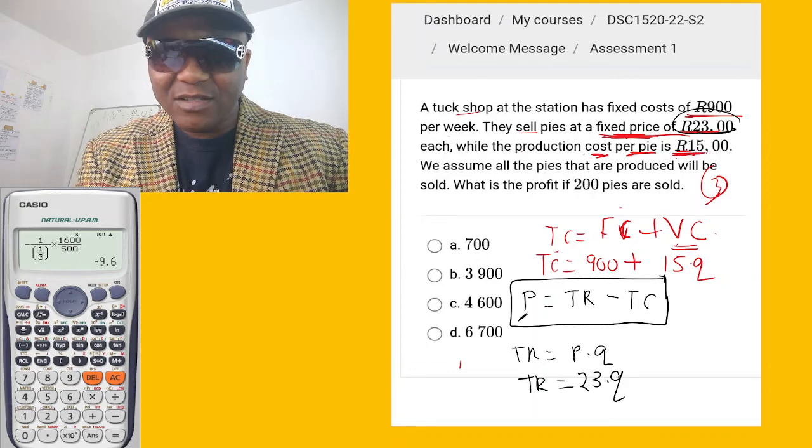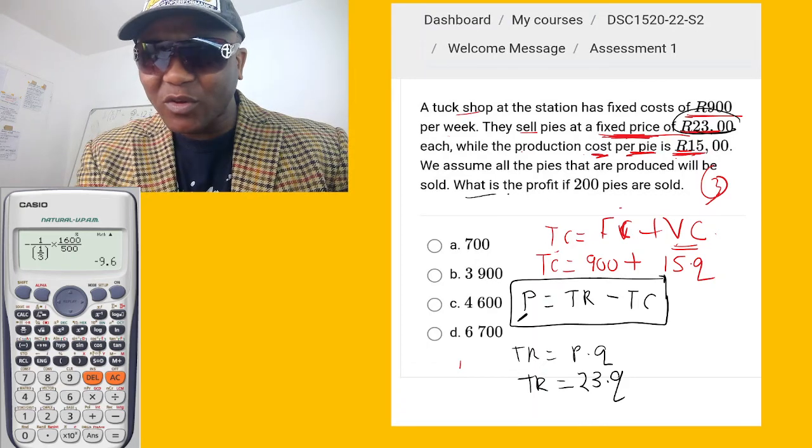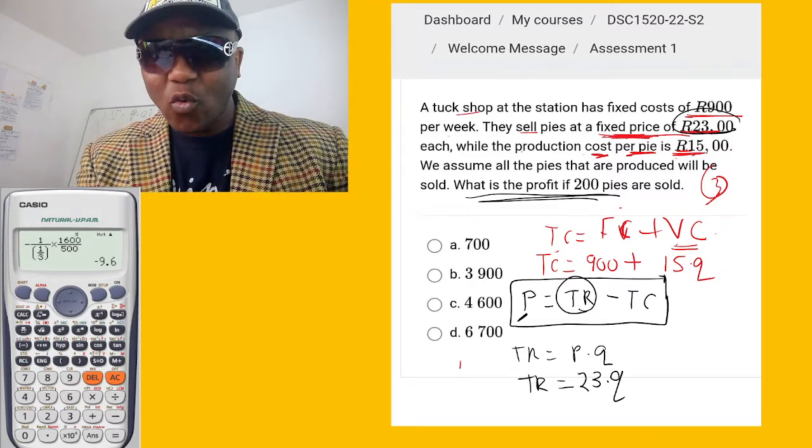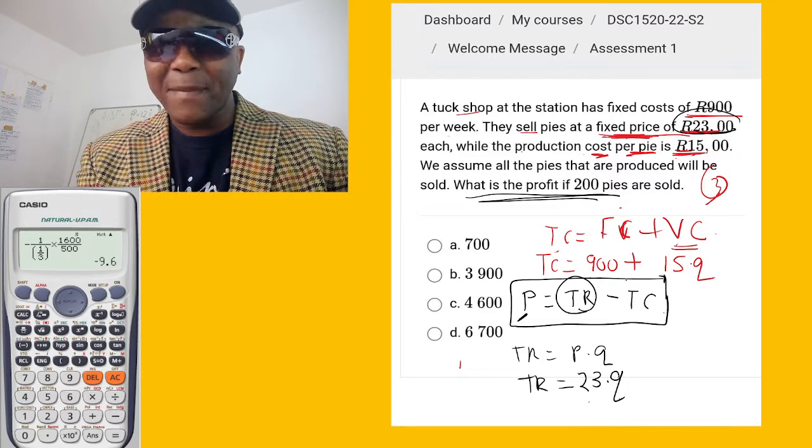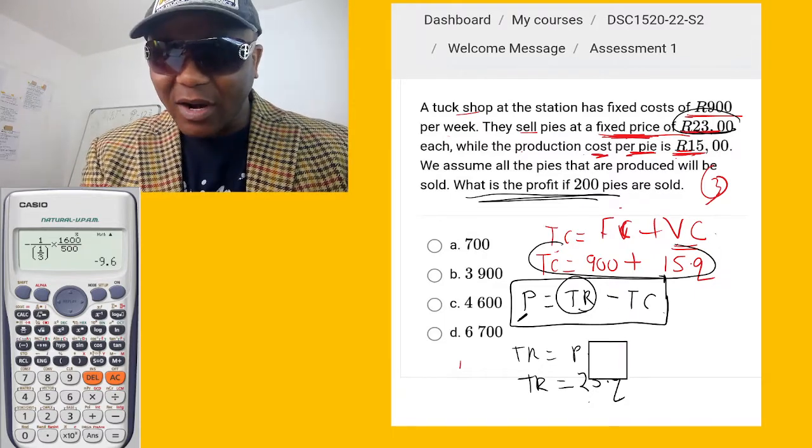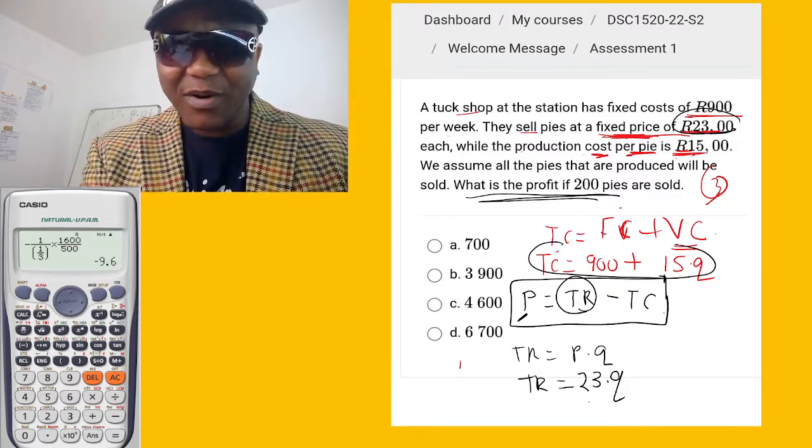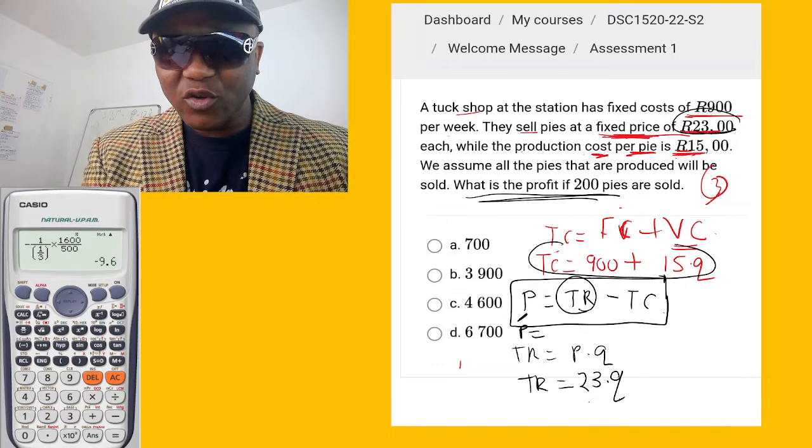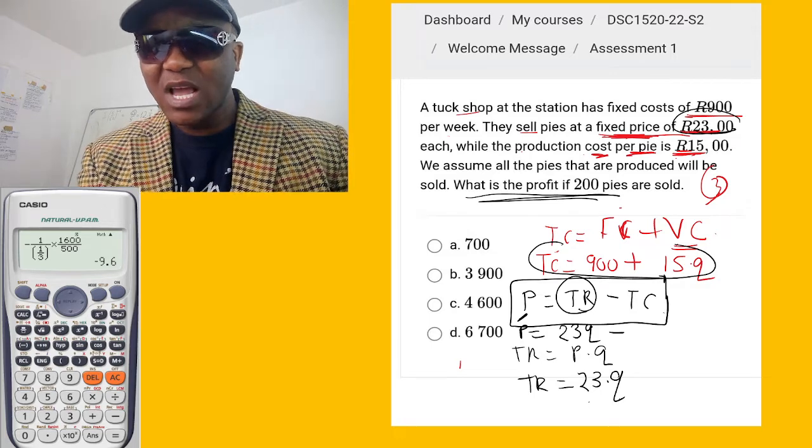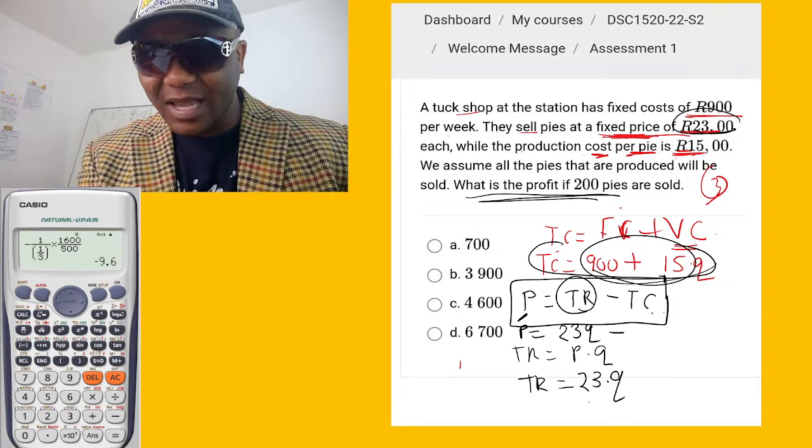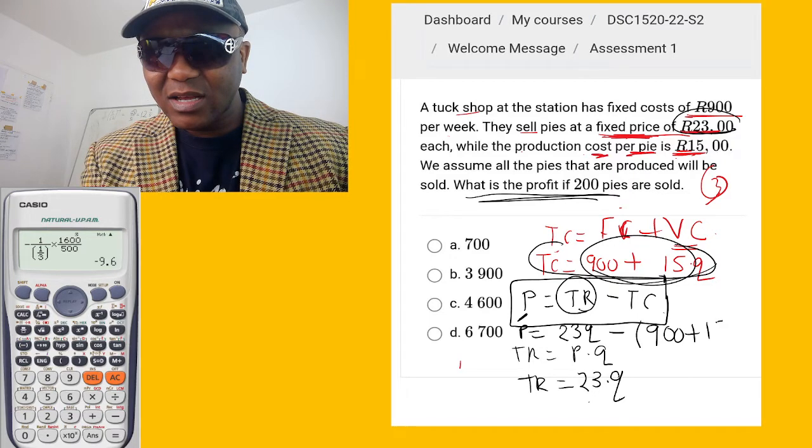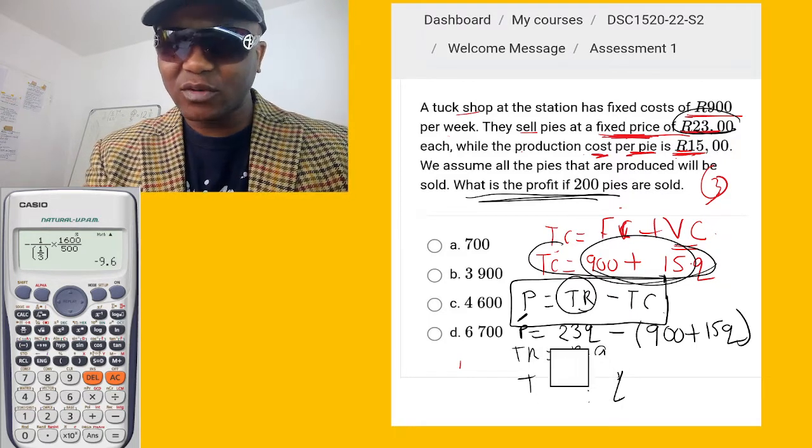Now to get the profit, they mentioned something about the profit in the question. To get the profit, I'm going to take the total revenue which we have, 23Q, minus total cost. Total cost we have this one here. So now I'm going to replace all this stuff here. Profit equals total revenue is 23Q minus total cost. What is the total cost? Our total cost is this one we had already. So bracket, 900 plus 15Q.